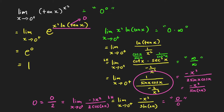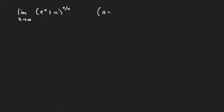Let's now move to our last problem. We evaluate the limit of this expression as x approaches infinity. Clearly, this is an indeterminate form when a is not equal to 0. The base approaches infinity as x approaches infinity, and the exponent a over x approaches 0 as x approaches infinity. So this has the limit form infinity raised to 0.